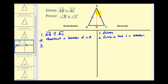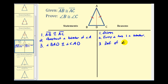Step three, if AD is an angle bisector, we can say that angle BAD is congruent to angle CAD. This is by definition of an angle bisector. So we know this little angle here is congruent to this little angle here. And then for the other congruent side, we can state that segment AD is congruent to itself — this is by the reflexive property.